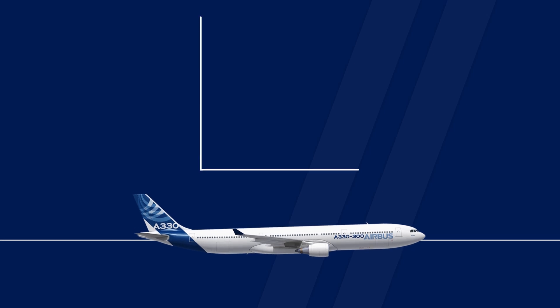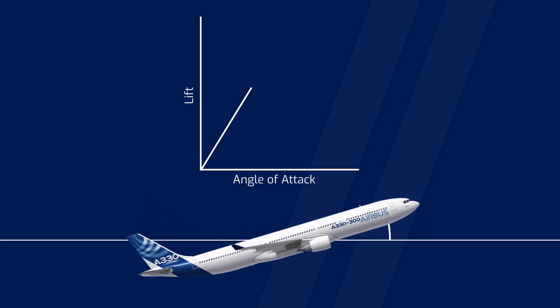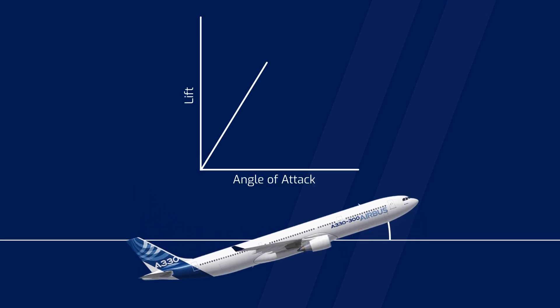But as soon as the angle of attack increases, more and more lift is generated. This is, among other factors, due to the fact that air travels faster along the upper side of a wing and creates an area of low pressure on this side, which lifts the wing up into the air.